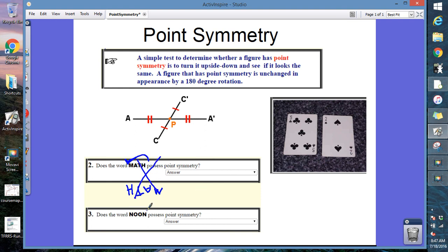Alright what about the word NOON? We're going to flip the word NOON 180 degrees. Guess what? I believe if you flip the word NOON 180 degrees it's still going to look like the word NOON. So this one does have point symmetry.